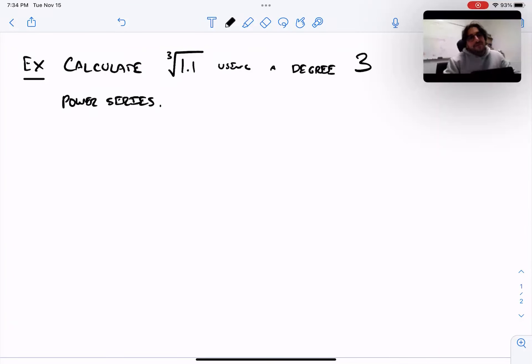Hello. So today I want to show a classic example of a binomial series calculation. Suppose you have an ugly cube root function and you want to evaluate it at this point, 1.1.